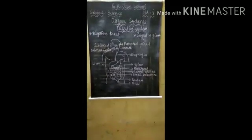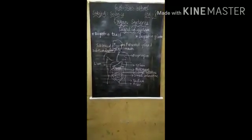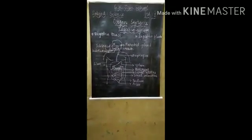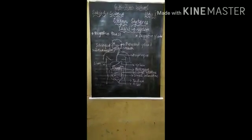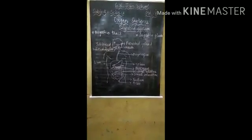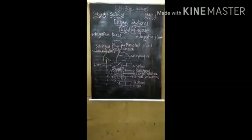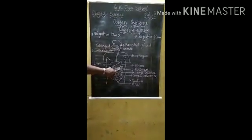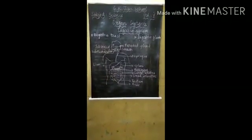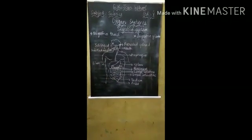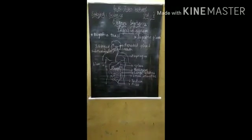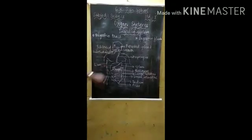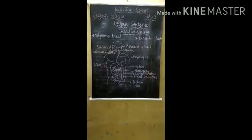The salivary glands secrete saliva which moistens food. Saliva contains enzymes which break down the complex starch into simple carbohydrate molecules. The pancreas produces pancreatic juice which contains digestive enzyme for digesting fats. Liver produces the bile for the digestion of fat.